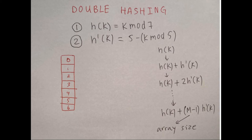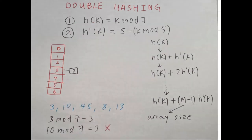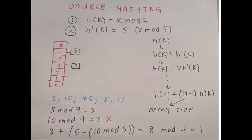In the case of a collision we do the primary hash function plus the secondary hash function. If there's another collision we do primary plus 2 times secondary, and so on. Starting with key 3: 3 mod 7 is 3. Then 10 mod 7 is also 3 — a collision — so we apply the secondary hash function: 3 + (5 minus 10 mod 5) equals 8, and 8 mod 7 is 1. Index 1 is unoccupied, so we put 10 there.